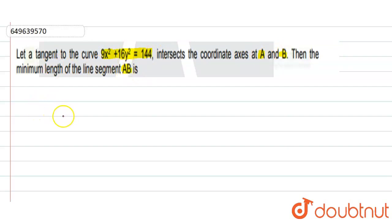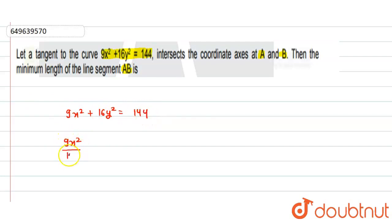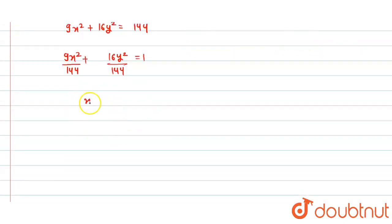Now, what we are given here: 9x² + 16y² = 144. Dividing throughout by 144: 9x²/144 + 16y²/144 = 1, which simplifies to x²/16 + y²/9 = 1.